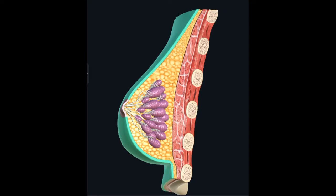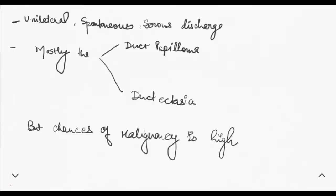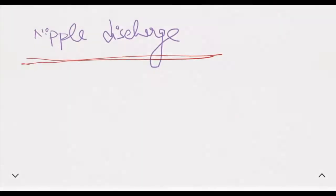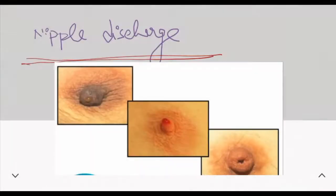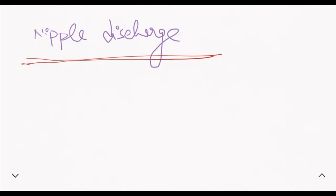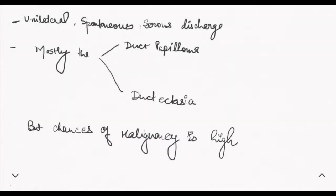We are going to discuss abnormal nipple discharge. Nipple discharge is one of the most common symptoms of breast cancer, and we know that breast cancer is the most common cancer in women. If the nipple discharge is unilateral, spontaneous, and serous discharge from a single duct, it is generally due to intraductal papilloma.